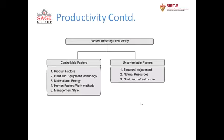Controllable factors include material — what material we use and where we purchase it from; we can choose the quality of material. Human factors and work methods — how the work is done — are also controllable. Management styles and policies can be changed from time to time as well.